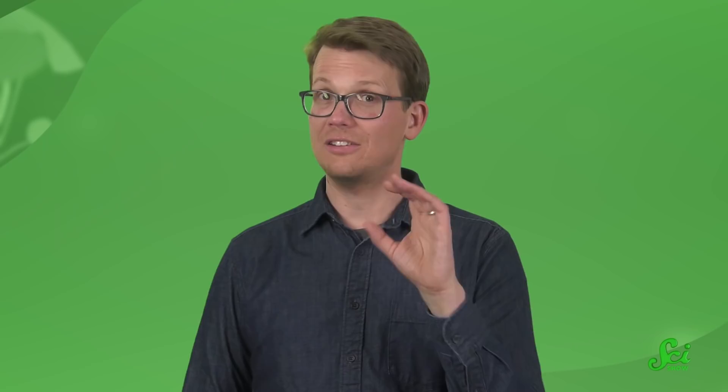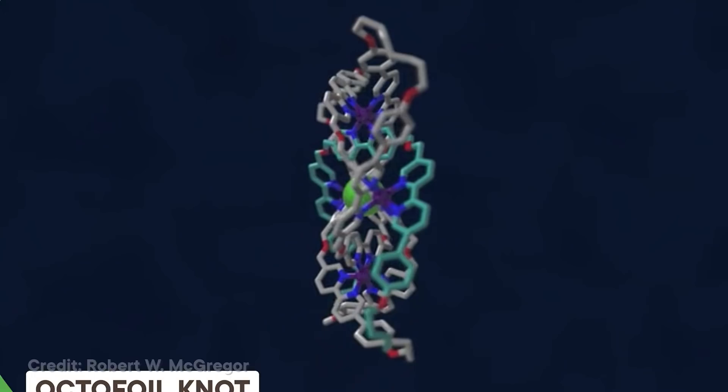Scientists are also developing new and interesting materials made from knotted nanoparticles. Synthesizing tiny knots is tricky business. But in 2017, chemists created what they call the octofoil knot out of just 192 atoms. They still aren't sure of its properties, but hope it will be useful for creating things like ultralight armor or flexible surgical sutures.